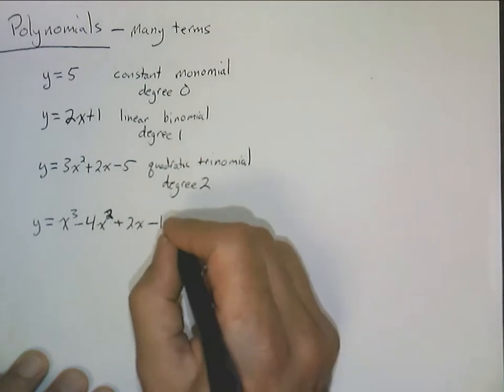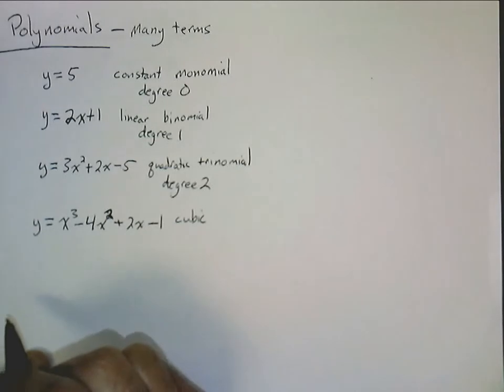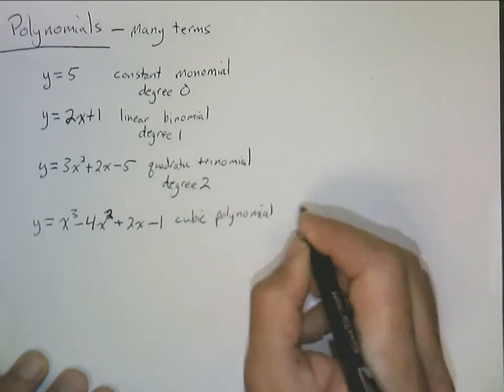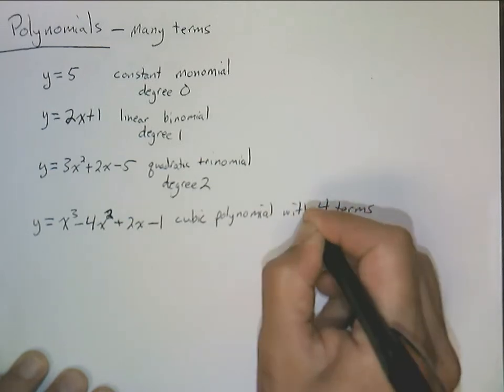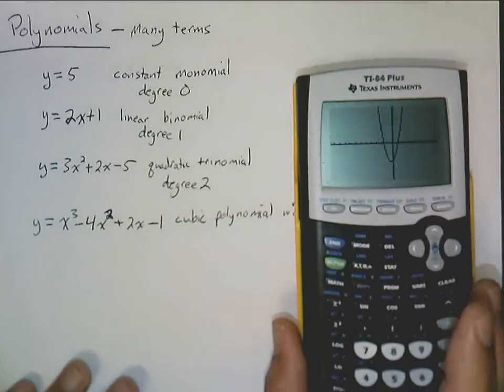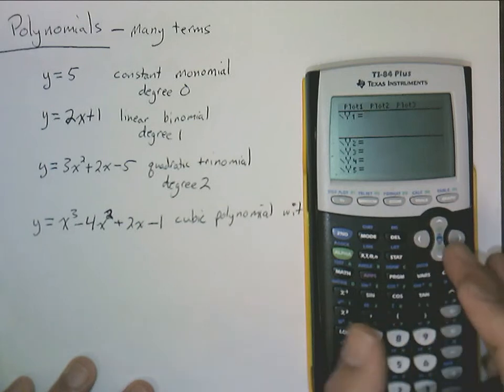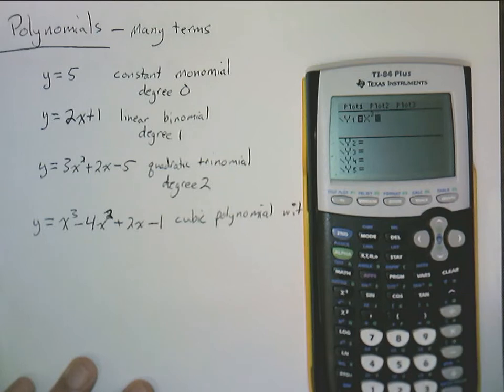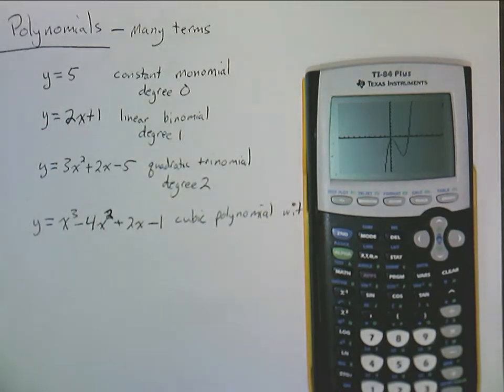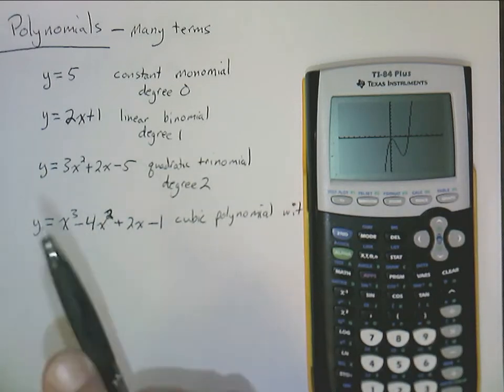This would be a cubic polynomial. Because there is a cubing function going on in here. And this has one, two, three, four terms. So it's a cubic polynomial with four terms. We don't have any special names for anything above 3, really. Well, you kind of do, but we're not going to deal with that. If you want to see what a cubic looks like. Let's go here. Clear this one out. So it's going to be x cubed minus 4x squared plus 2x minus 1. And let's make sure my axes are right. Oh, interesting. Okay. So this thing goes up, then curves, goes back down, and then goes up again.